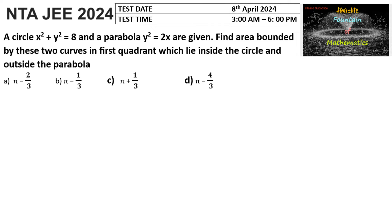A circle x² + y² = 8 and a parabola y² = 2x are given. Find the area bounded by these two curves in the first quadrant, which lies inside the circle and outside the parabola.